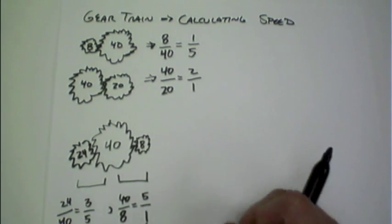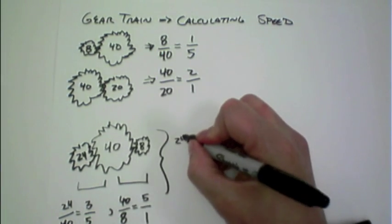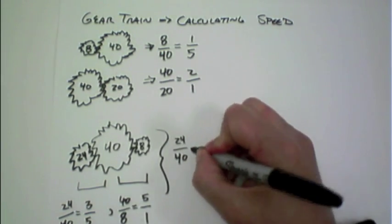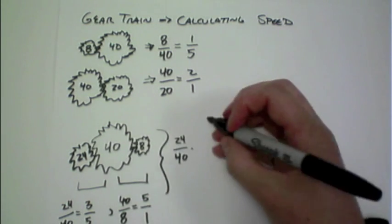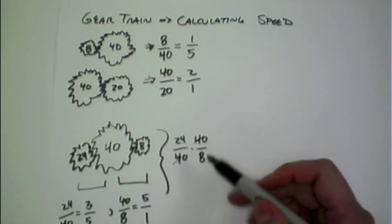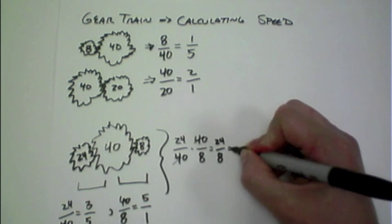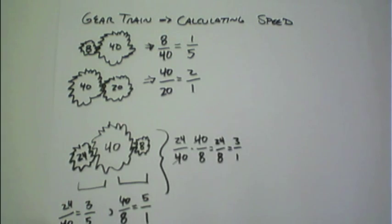So to show that again, we started with the 24-to-40, and we combine that together with a 40-to-8, and the two 40s cancel out, resulting in a 24-to-8 or a 3-to-1 relationship.